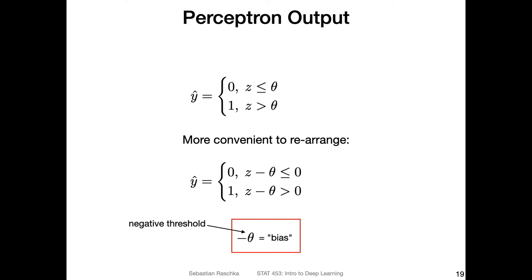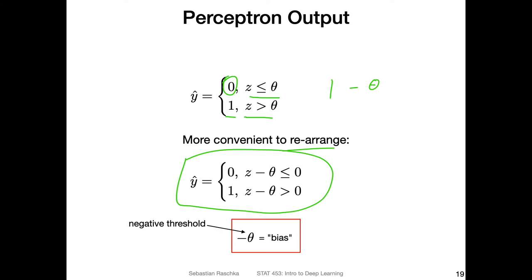I want to make one small change to the formula for convenience. We return zero if z is smaller or equal to theta the threshold, and one if z is greater than theta. By applying the operation of subtracting theta from both sides, we bring theta to the left side and get: return zero if z minus theta is smaller or equal to zero, and return one if z minus theta is greater than zero.